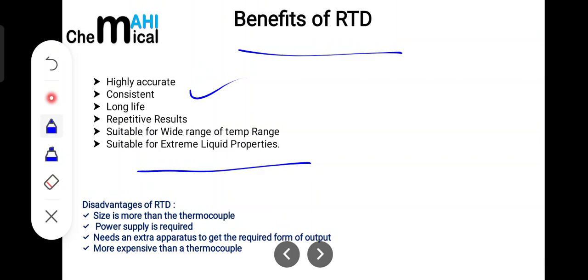Now if we talk about the disadvantages of RTD: its size is more than that of the thermocouple. Power supply is required here compulsory as the variation in resistance is provided to the electric current. The name already suggests that electric current is a compulsory thing that must flow through the circuit. An extra apparatus is needed to get the required output. After this sensing element senses it, it goes to the Wheatstone bridge, so that is an additional requirement for measuring this temperature. And it is more expensive than a thermocouple.